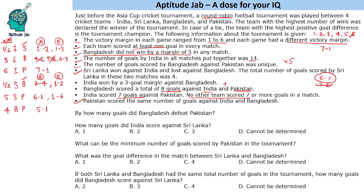Answering the questions: By how many goals did Bangladesh defeat Pakistan? That can be determined — it is 4 goals. How many goals did India score against Sri Lanka? India's score can be determined as 1 goal, though we cannot determine how many Sri Lanka scored against India. What is the minimum number of goals scored by Pakistan? Pakistan scored 1 goal against India, 1 goal against Bangladesh, and a minimum of 1 in the Sri Lanka vs Pakistan match (since we don't know who scored 6 and who scored 1), giving a minimum total of 3 goals.